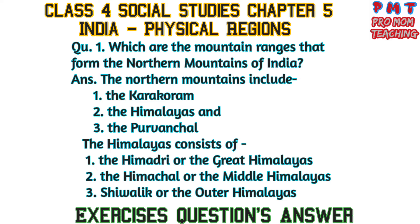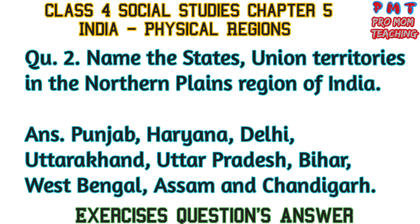The Himalayas also include — second, the Himachal or the Middle Himalayas; and third, the Shivalik or the Outer Himalayas. Question number 2: Name the states and union territories in the northern plains region of India. Answer: Punjab, Haryana, Delhi, Uttarakhand, Uttar Pradesh, Bihar, West Bengal, Assam, and Chandigarh.